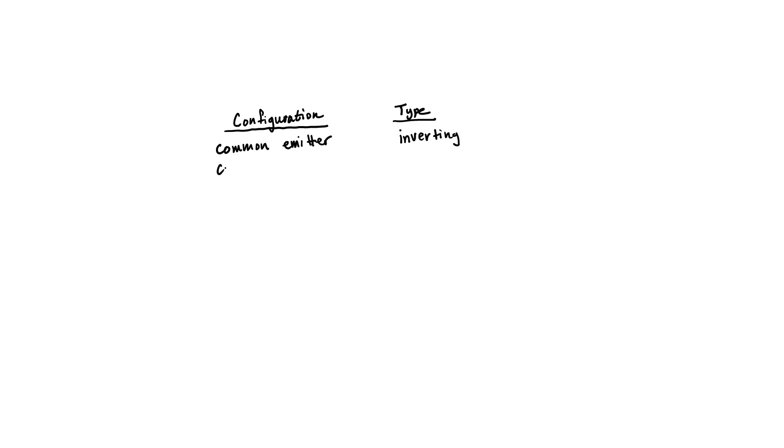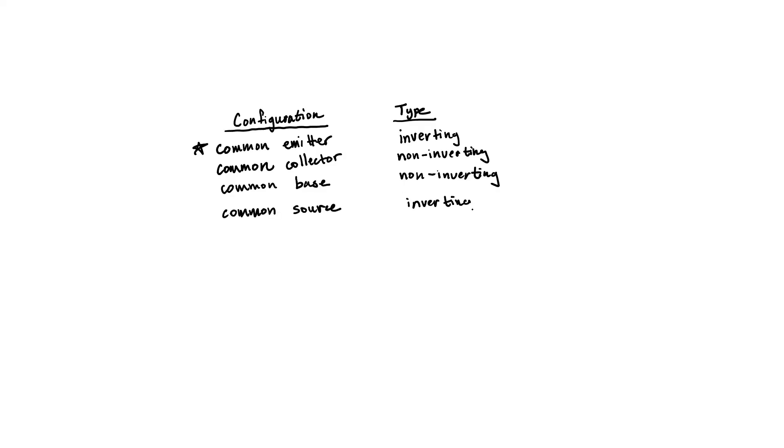To summarize: for bipolar transistors, only the common emitter configuration is inverting — that's worth memorizing. For field effect transistors, the source is entirely analogous to the emitter of bipolar transistors, so a common source configuration is inverting. The other two configurations, common drain and common gate, are non-inverting. In this video, we've learned how to identify various configurations of amplifiers. It turns out that the voltage gain for some configurations is higher than one, and for others it's nearly one or even less than one. Why might you want an amplifier with a voltage gain less than one? That's what we'll look at in the next video.